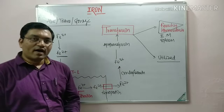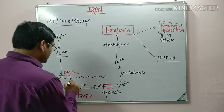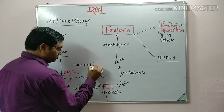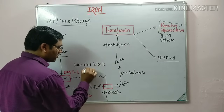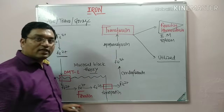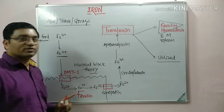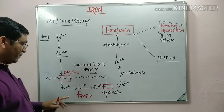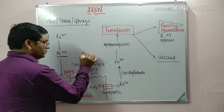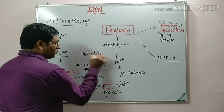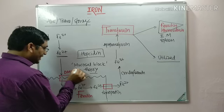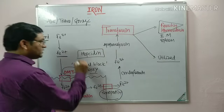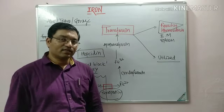The regulation of iron level is done at the level of the mucosa — this is known as the mucosal block theory. When demand increases, absorption increases; when demand decreases, absorption decreases at the mucosal level. Hepcidin is a protein which down-regulates the level of divalent metal ion transporter and ferroportin, and it is important in the regulation of iron at the mucosal level.